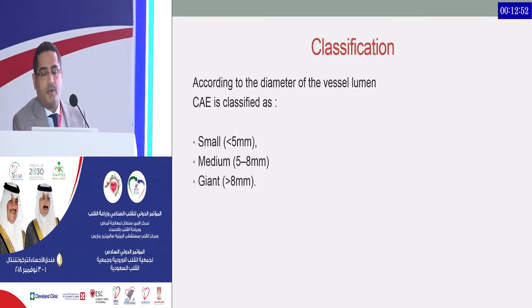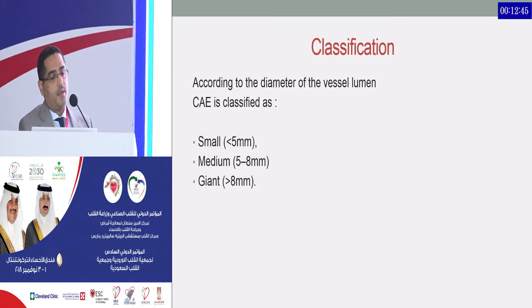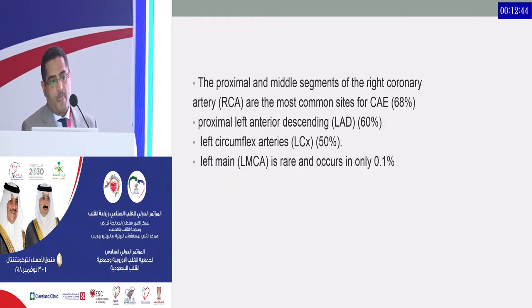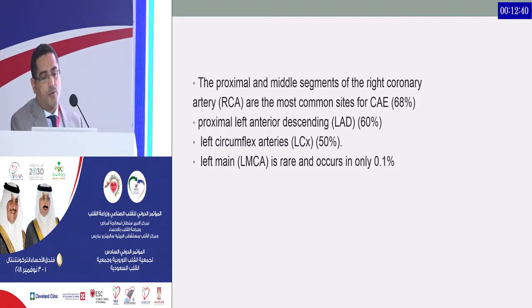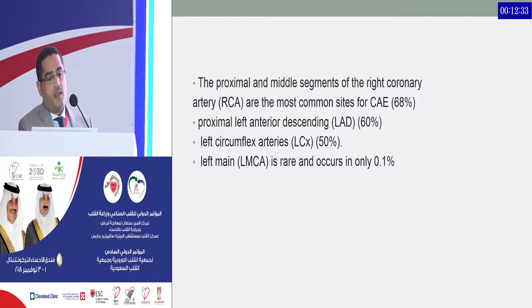Classification of ectasia according to vessel diameter: small ectasia is less than 5 millimeters, medium is 5 to 8 millimeters, and giant is more than 8 millimeters. The most common site is the proximal and mid-RCA in 68 percent of patients, followed by proximal LAD in 60 percent, then circumflex in 50 percent. Left main ectasia is very rare, occurring in only 0.1 percent.